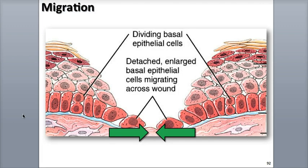Upon injury to the epidermis, cells in the stratum basale on either side of the wound detach from the basement membrane, enlarge, and begin migrating across the wound.